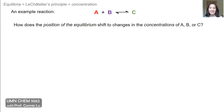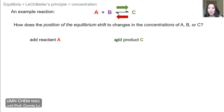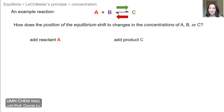The first change we'll discuss is concentration. How does the position of the equilibrium shift with changes in the concentration of reactants and products? I have a general equation where A and B are reactants and C is the product. For simplicity I'll cover reactant A, but the same applies to reactant B. These arrows represent the shift of the equilibrium — does it shift toward C (green arrow) or toward the reactants (red arrow)? The response, according to Le Chatelier's Principle, is always in opposition to the external change.